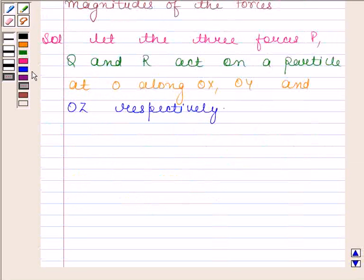So, angle XOY is equal to 120 degrees, angle YOZ is equal to 90 degrees, and angle ZOX is equal to 150 degrees.